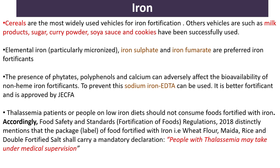Cereals are the most widely used vehicles for iron fortification. Other vehicles such as milk products, sugar, curry powder, soy sauce, and cookies have been successfully used. Elemental iron — particularly micronized iron — and iron sulfate and iron fumarate are preferred iron fortificants. The presence of phytates, polyphenols, and calcium can adversely affect the bioavailability of non-heme iron. To prevent this, sodium iron EDTA can be used as a better fortification agent.